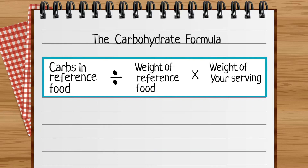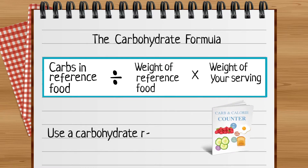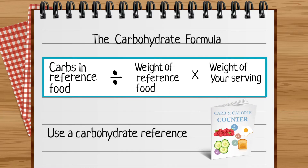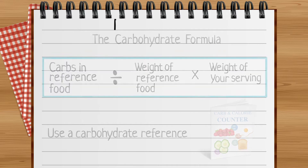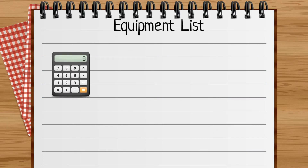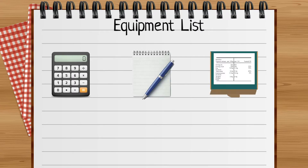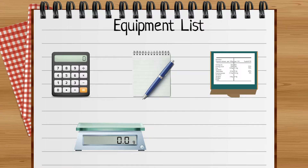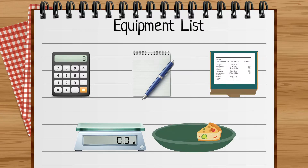In this calculation we need two pieces of information from a carbohydrate reference. To do the calculation you will need a calculator, a notepad and pen, the food label, digital scales, and the food you want to eat.